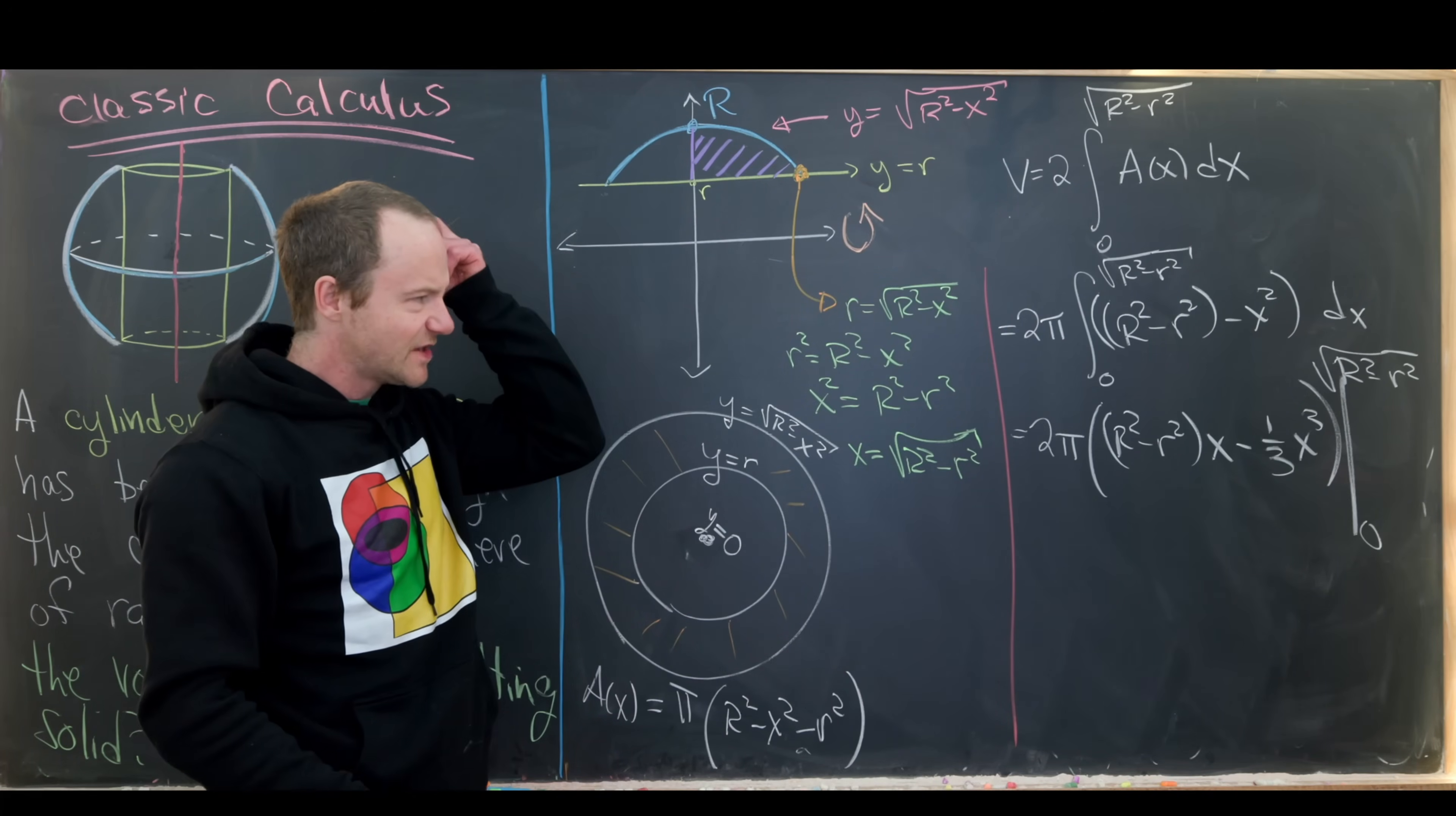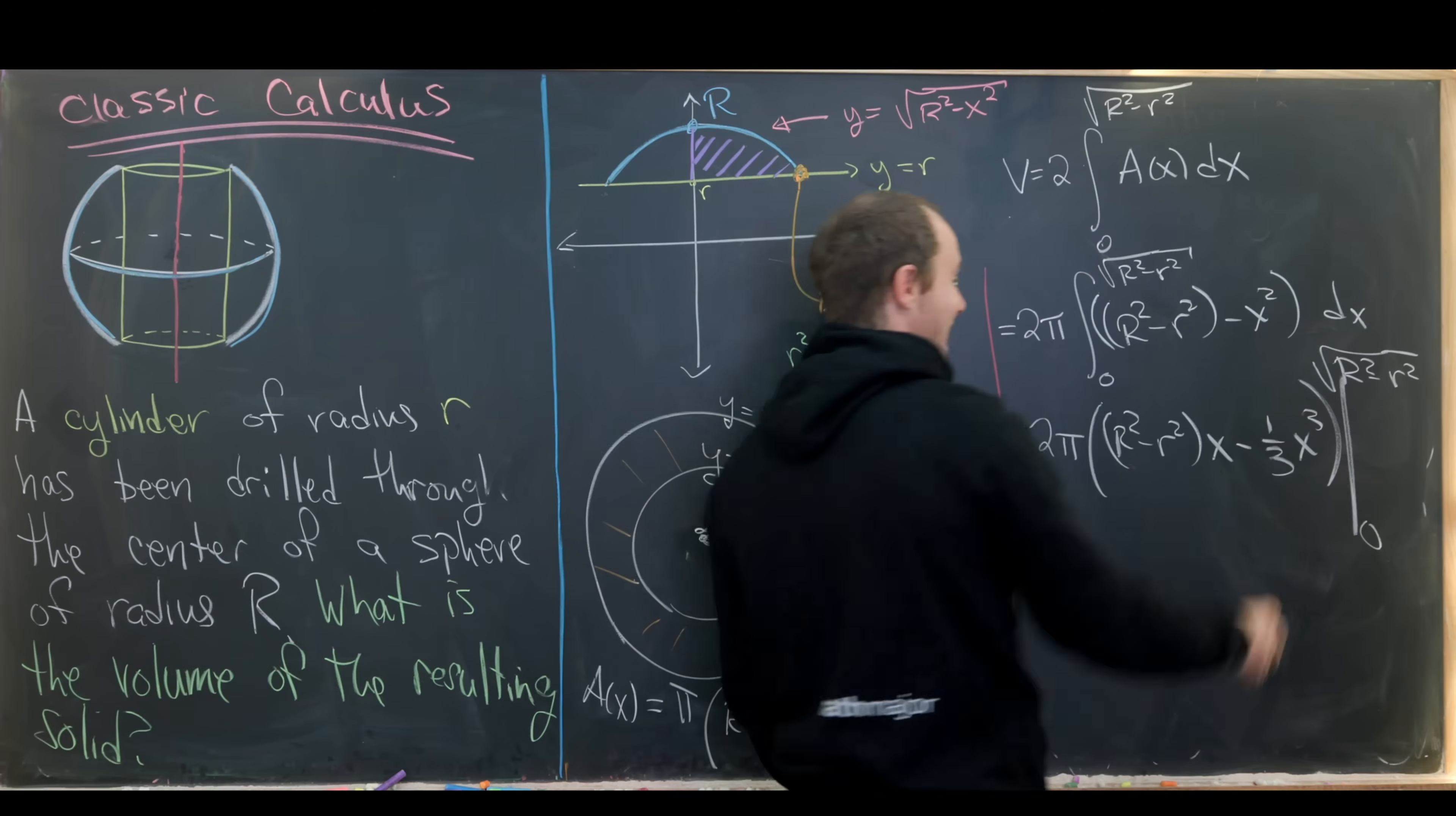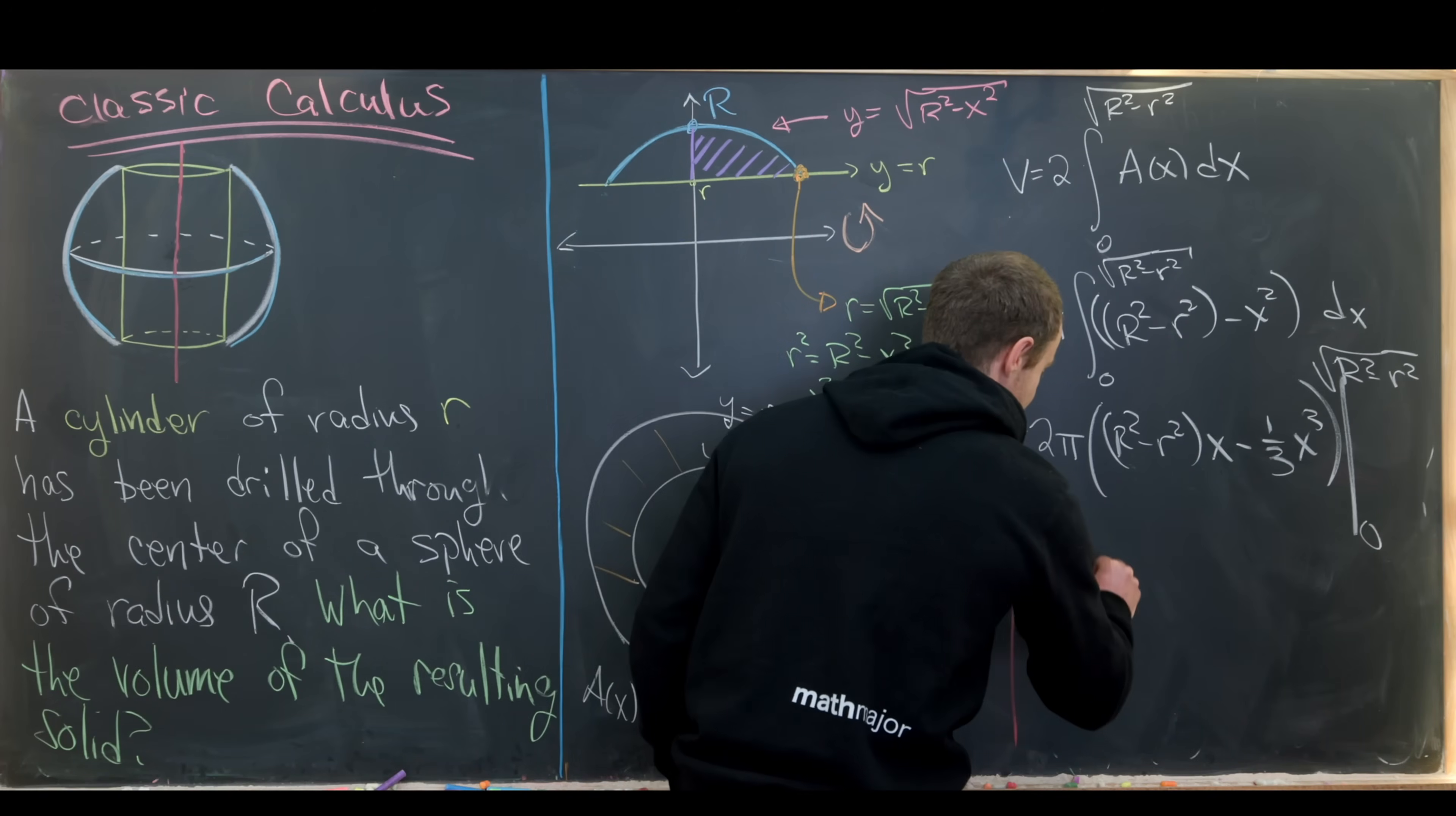Okay. So the interesting thing here is when we plug this square root of R squared minus r squared in here, we'll have R squared minus r squared to the three halves from this term and from this term. From this term, it's attached to a coefficient of one. From this term, it's attached to a coefficient of one third. So that can simplify to two thirds.